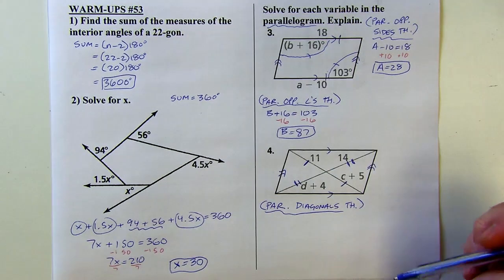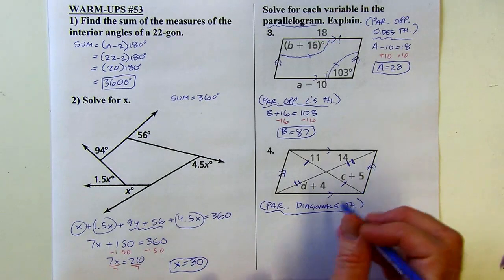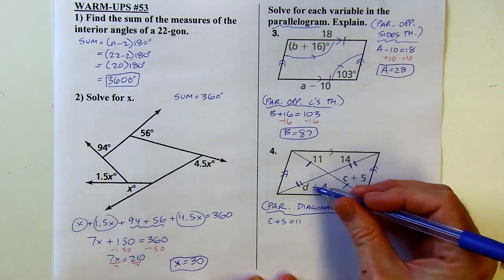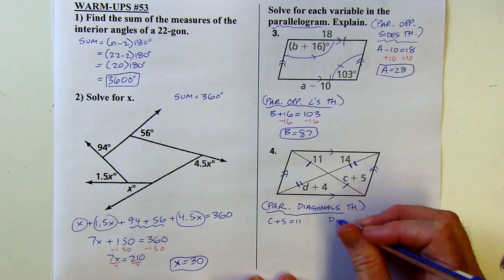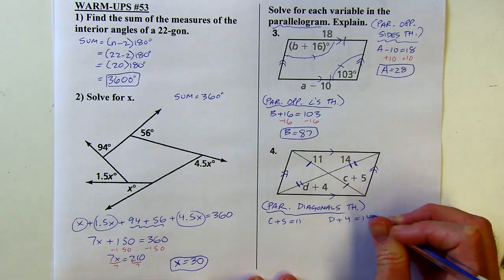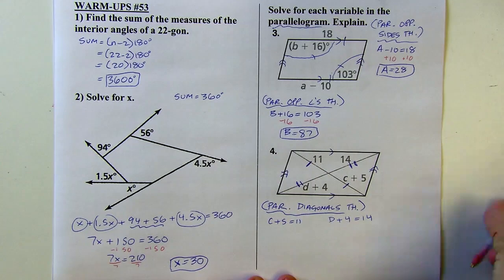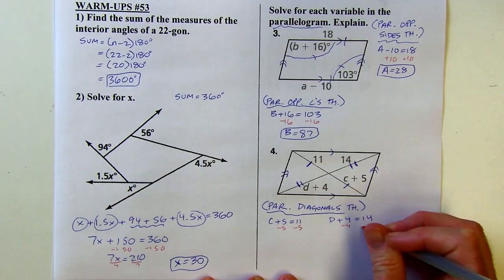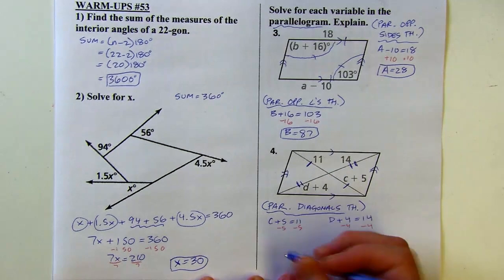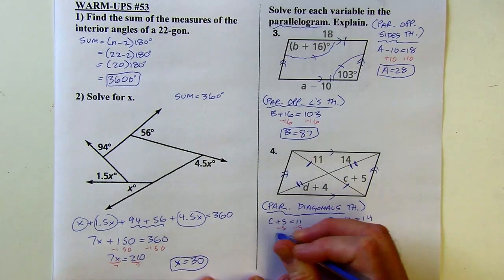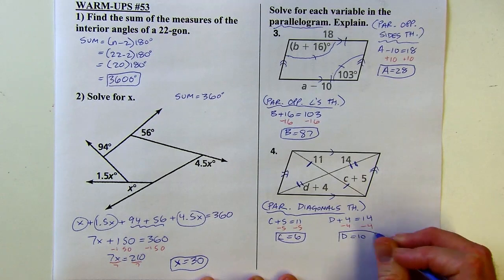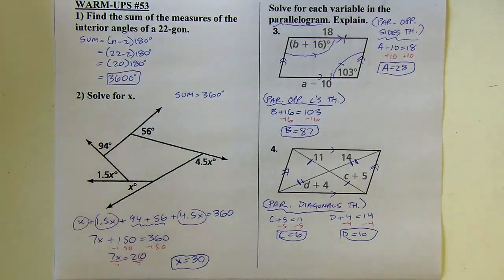I have a long diagonal and a short one. But now I can say that c plus 5 is going to equal 11. I can also say that d plus 4 equals 14. And now I can solve both of those for the variables. So c will equal 6 and d will equal 10. And that is it for this warm-up and I'll see you next time.